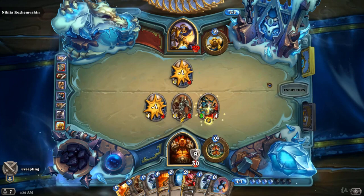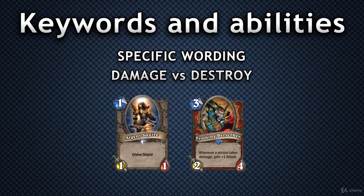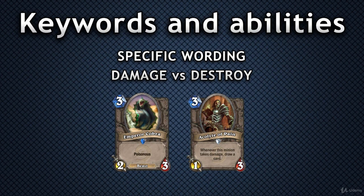Divine Shield removal not counting as damage dealt is also relevant to another mechanic which relies on directly damaging the target: the Poisonous keyword. In order for Poison to work, the condition of dealing damage has to be met. This means that a Poisonous minion hitting a Divine Shield, or trading after being reduced to zero attack with something like a Pint-Sized Potion, will not trigger and will not destroy the target if it doesn't damage it.